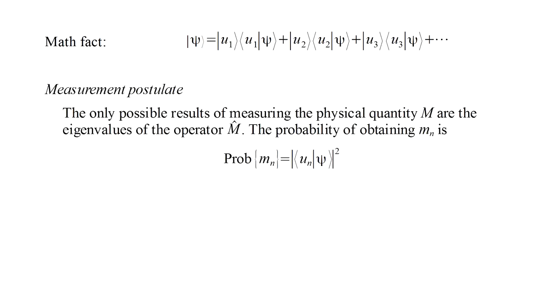The measurement postulate says that the only possible results of measuring the physical quantity m are the eigenvalues of the operator m hat. Moreover, the probability of obtaining the eigenvalue m sub n is the squared magnitude of the projection of the wave function onto the corresponding eigenstate u sub n.